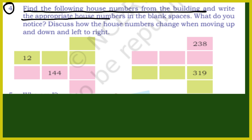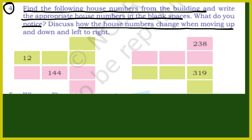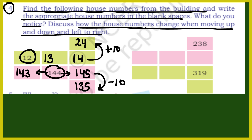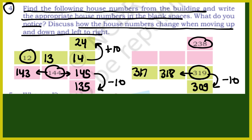Next: find the following house numbers from building and write the appropriate house numbers in the blank spaces. What do you notice? Discuss how the house numbers change when moving up/down and left/right. जैसे यह 144 दिया है — 1 right में गए तो 1 add होगा: 145. 1 left में गए तो 1 minus: 143. 145 के just नीचे minus 10 होगा: 135. यहां 12 दिया है — right में: 13, 14. 14 के उपर 10 add: 24. यहां 319 है — just नीचे 10 minus: 309. Left में 1 minus: 318, 317. 238 दिया है — just नीचे 10 minus: 228. Left में: 227, 226.